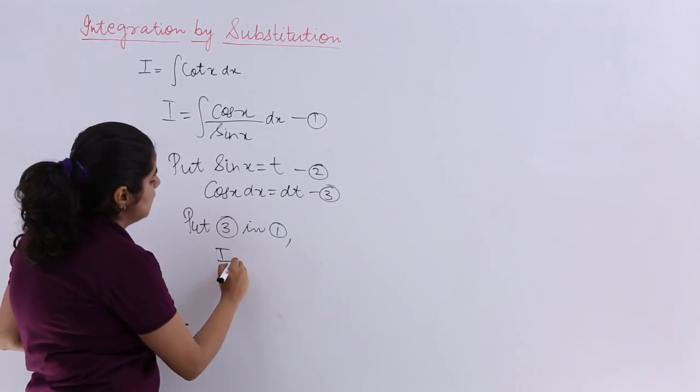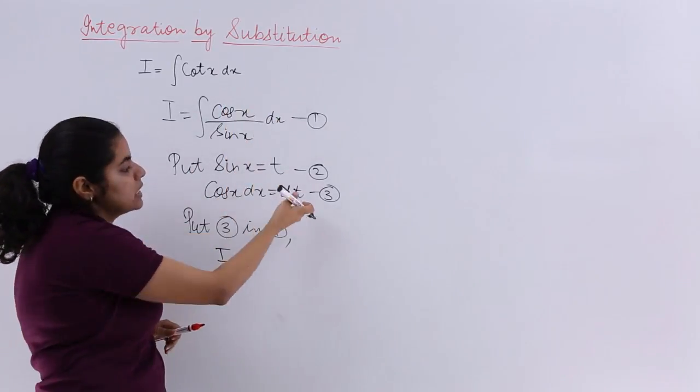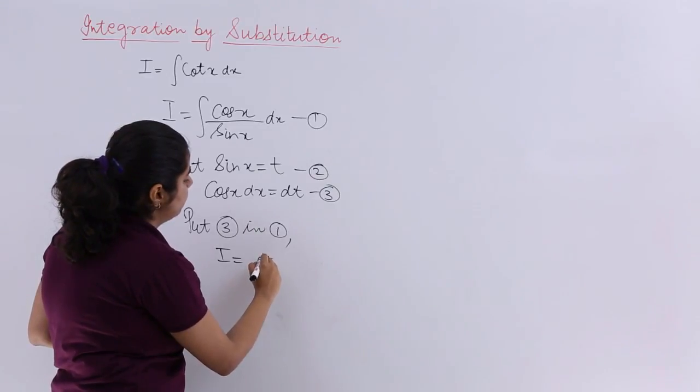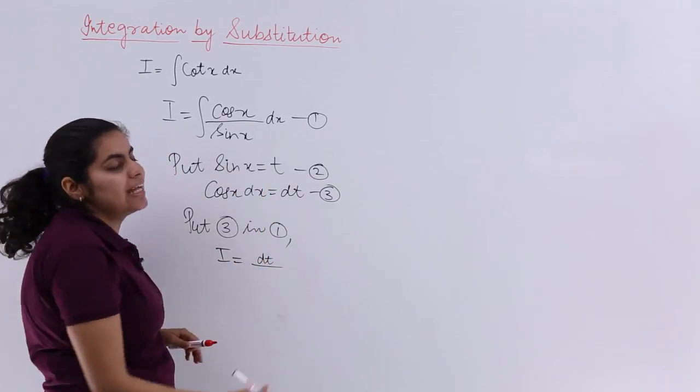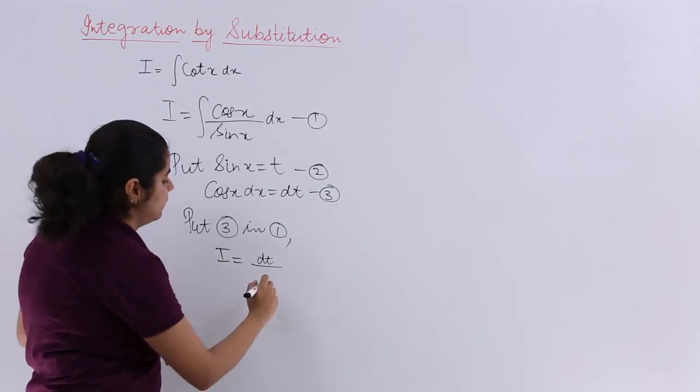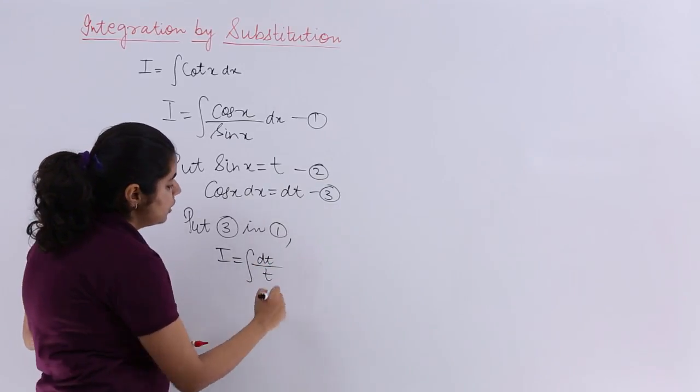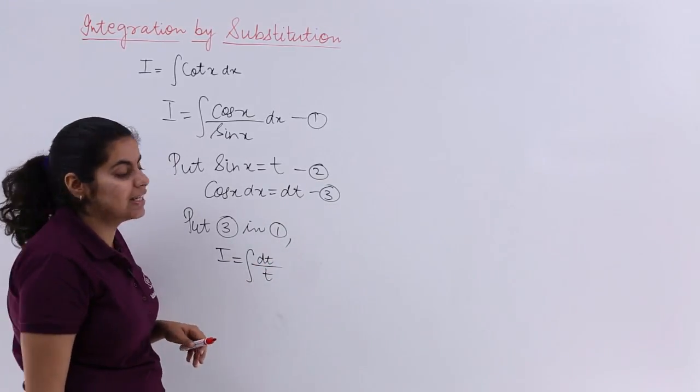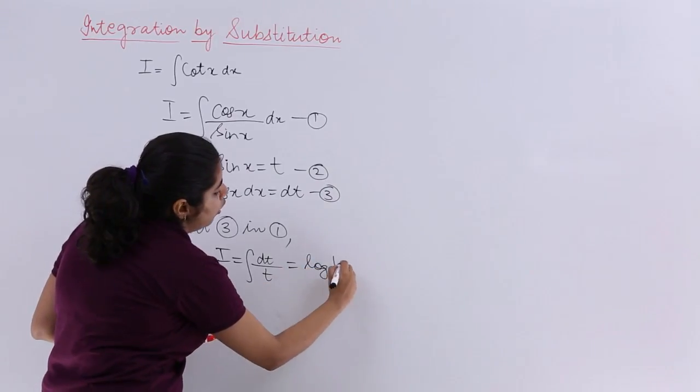So I have integration of cos x dx, that is dt upon sin x. Sin x is t, and now what is dt upon t's integration? It is log mod t plus constant of integration.